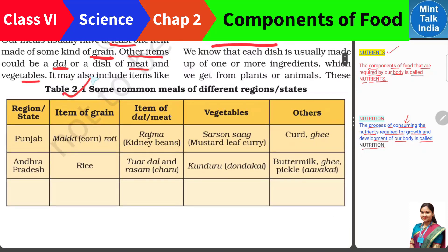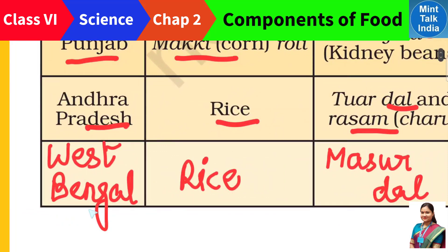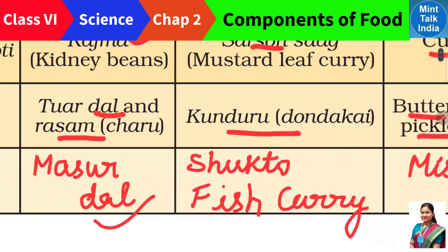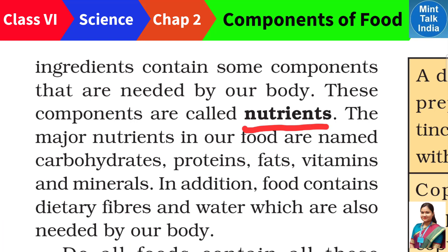Now let's see Table 2.1 — here are some common meals of different regions. Punjab mein rehne wale log makke ki roti, sarso ka saag, aur saath mein rajma bhi khaayenge, rajma chawal khaayenge aur thoda dahi ya ghee bhi lenge. Uttar Pradesh mein rehne wale log chawal ko dal ke saath ya raita ke saath khaate hain aur ek sabzi bhi rehti hai, aur chhaach, achar, ya ghee bhi hota hai. Bengali home — Bengal mein rehne wale log zyada tar rice khaate hain, rice ko dal ke saath khaate hain, saath mein mixed vegetable shukto aur fish curry zaroor rehti hai, aur misti doi yani meethi dahi bhi bahut pasand karte hain. Toh humare plate mein itni variety isliye rehti hai kyunki sabhi food items ke components alag alag hote hain, aur inhi components ko nutrients kaha jata hai.